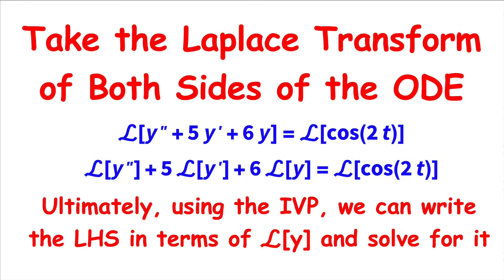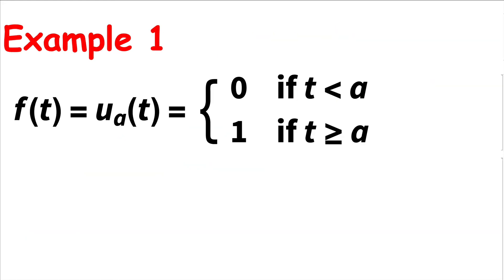Using more properties of the Laplace transform in relation to derivatives and initial values, we can write the left-hand side in terms of the Laplace transform of just y itself, then algebraically solve for it and ultimately find y as a function of t. Now let's use Mathematica to look at three very important examples visually. All three involve unspecified parameters, and the last example — example three — involves a cosine function that goes both above and below the axis.